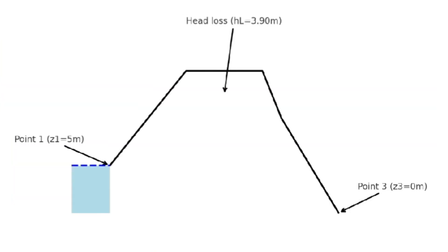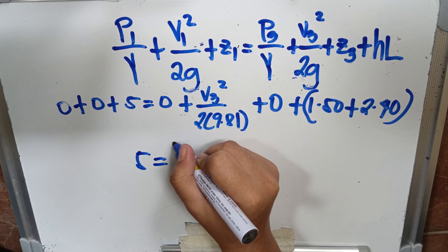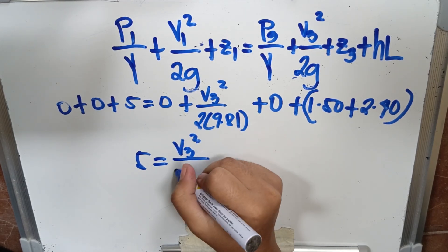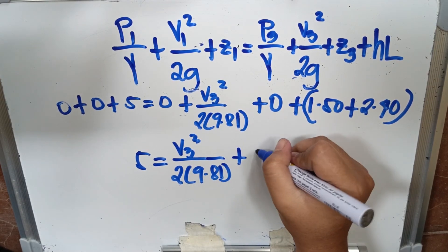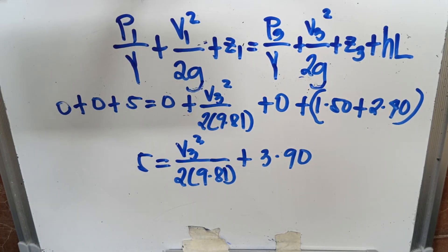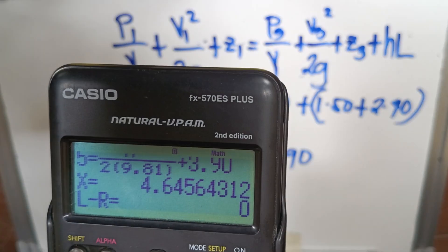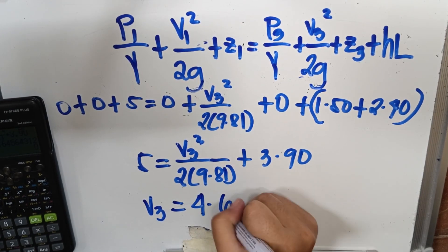We simplify to: 0 plus 0 plus 5 equals 0 plus V3 squared over 2 times 9.81 plus 0 plus 1.50 plus 2.40. The 1.50m and 2.40m are the head losses from point 1 to point 2 and from point 2 to point 3 respectively, giving a total head loss of 3.90 meters. So we have 5 equals V3 squared over 2 times 9.81 plus 3.90. Using shift-solve on the calculator, we get V3 equals 4.646 meters per second.